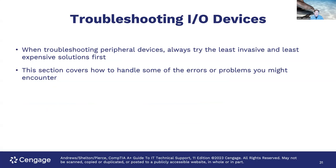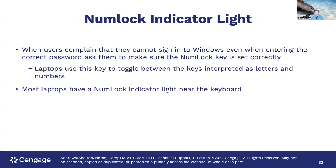When troubleshooting peripheral devices, always try the least invasive and least expensive solution first. One of the simplest issues is the numlock indicator light — when users complain they can't sign into Windows even with the correct password, check that the numlock key is set correctly. Laptops use this key to toggle between letters and numbers. This is sometimes called a PEBCAC error — Problem Exists Between Chair and Keyboard — or an ID10T error.